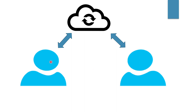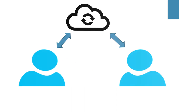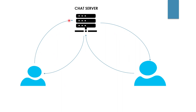When connected via the internet, neither user knows the other's address. We solve this by putting a common application server on the internet — a chat server — and forcing both users to send messages to our server. Once both connect, the server knows the address of both users and can relay messages between them. This approach also works for multiple users.